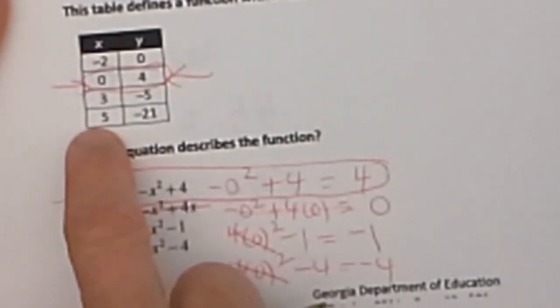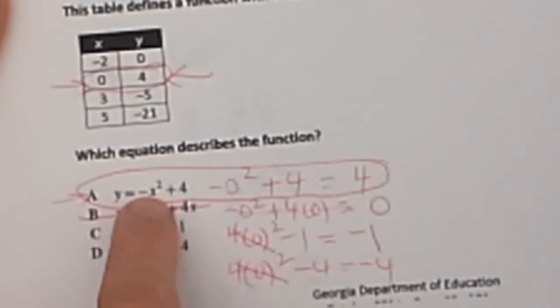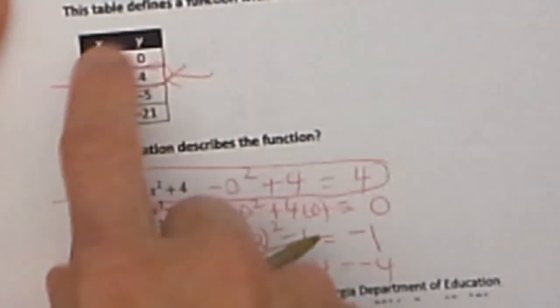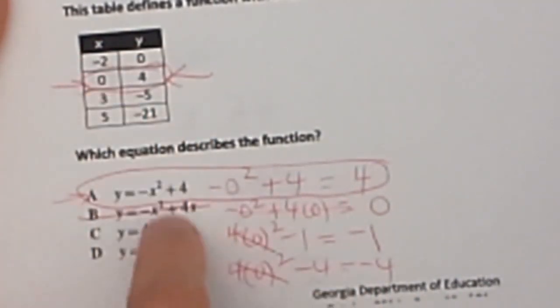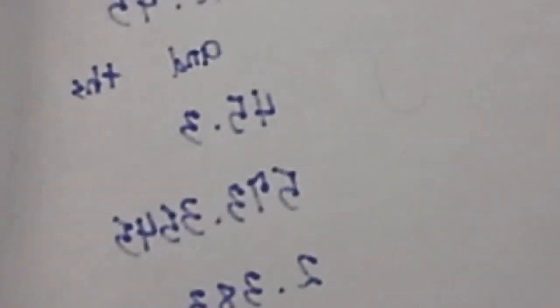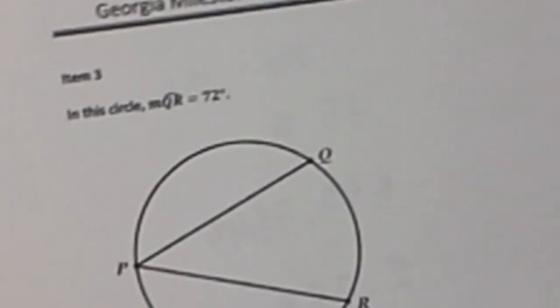Now I can double check it by plugging in some other x values. If I plug in negative 2, negative 2 quantity squared times 4, and then it has a negative in front. So negative 4 plus 4 is 0. So that works. So I am just spot checking these and they are working. So I know that A is my answer. Now let's look at the second page, which is problems 3 and 4.